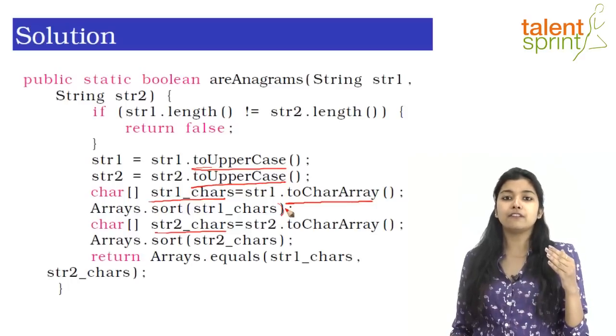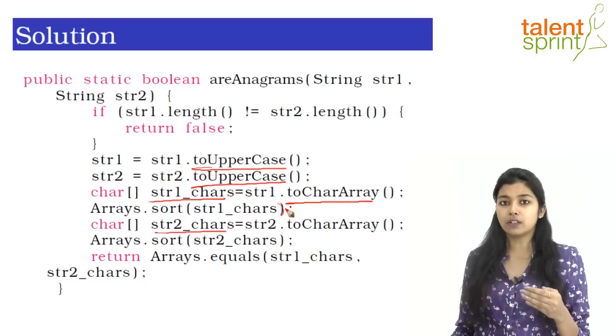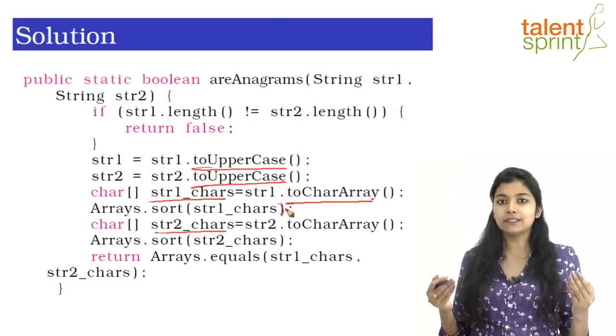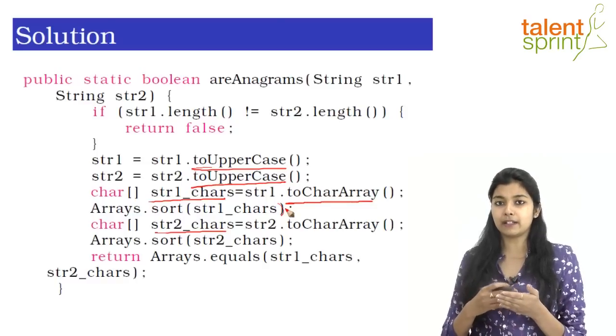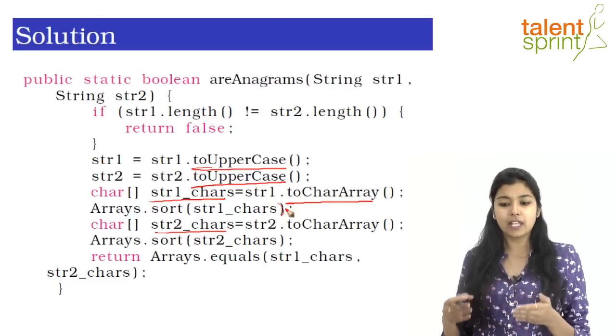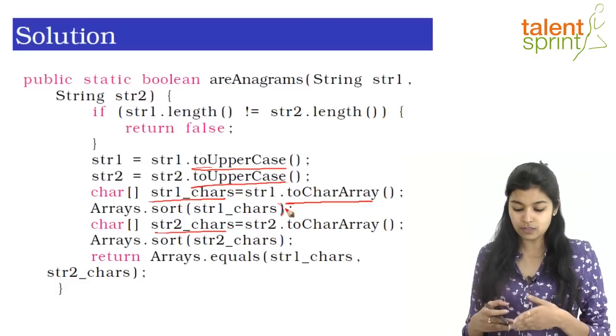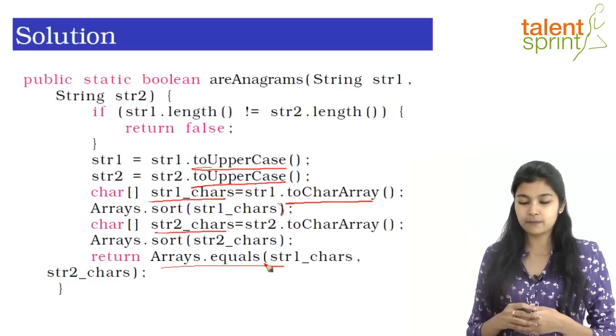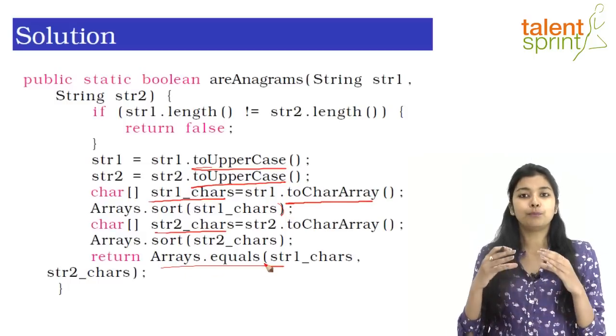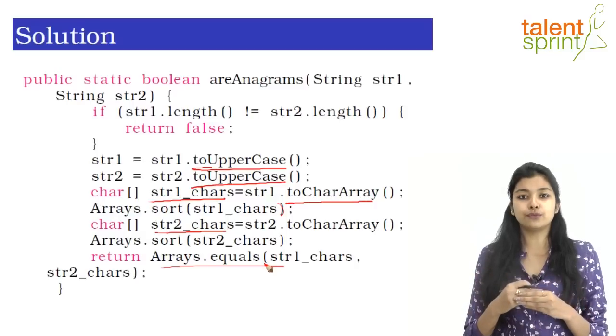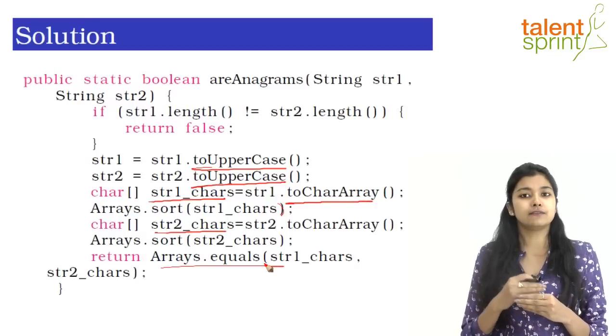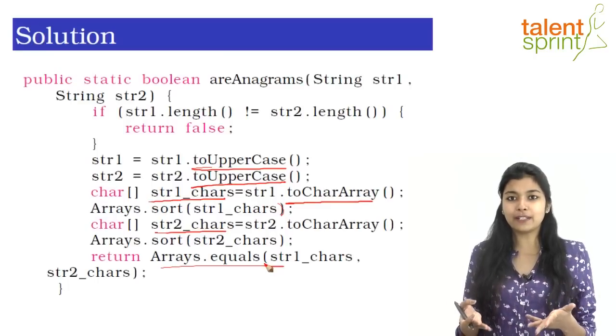Finally, when you have both your character arrays sorted, all you have to do simply is compare them both if character by character they match or not. For that also, you don't have to do anything. There is again a pre-existing function that you can use which is Arrays.equals. This will simply compare both the character arrays and return true if they are equal or return false if they are not equal. So fairly simple, right? All you had to do was remember certain pre-existing functions of string and arrays and the program got practically written for you by itself.